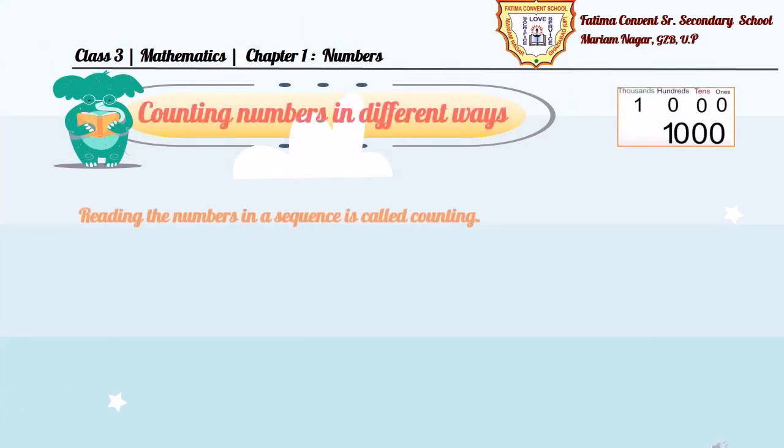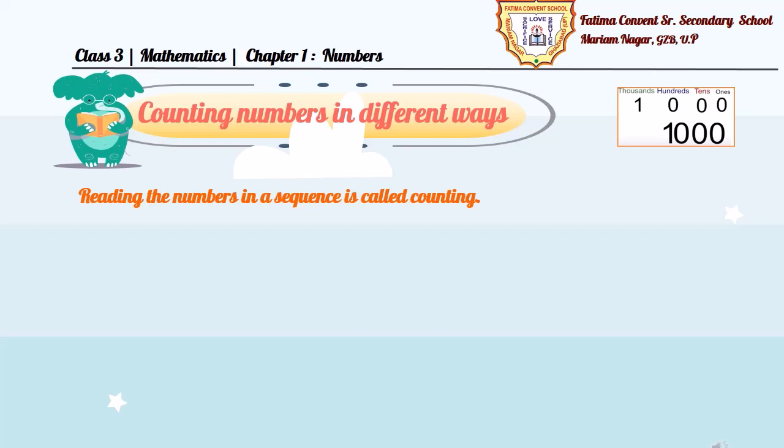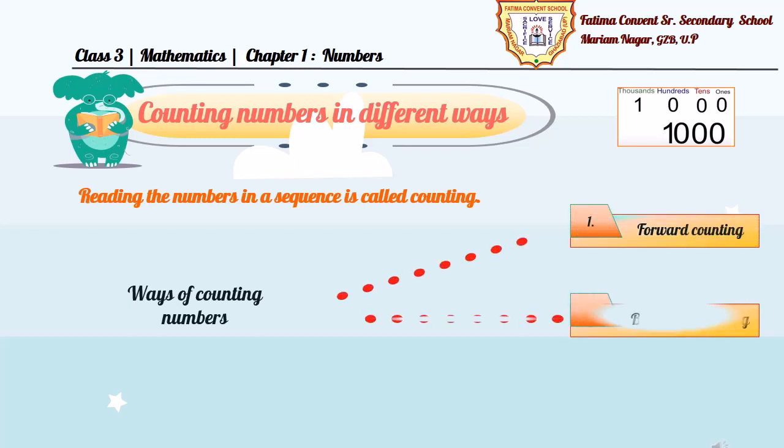Children, we have come to the last topic of the session, counting numbers in different ways. Children, you should know, counting is reading the numbers in a sequence. So, there are three ways of counting numbers. First, forward counting. Second, backward counting. And third, skip counting.